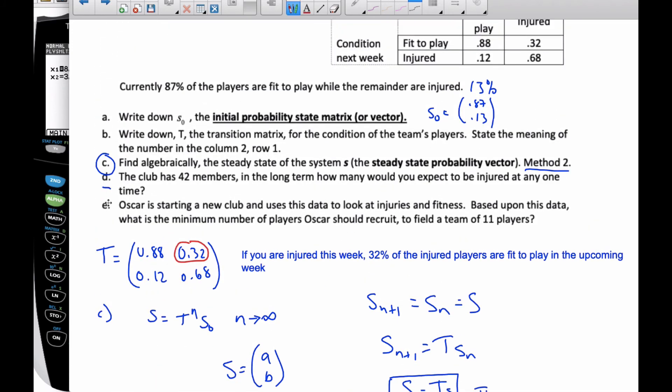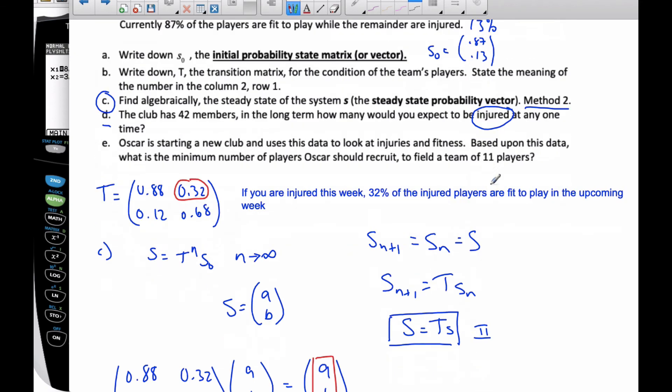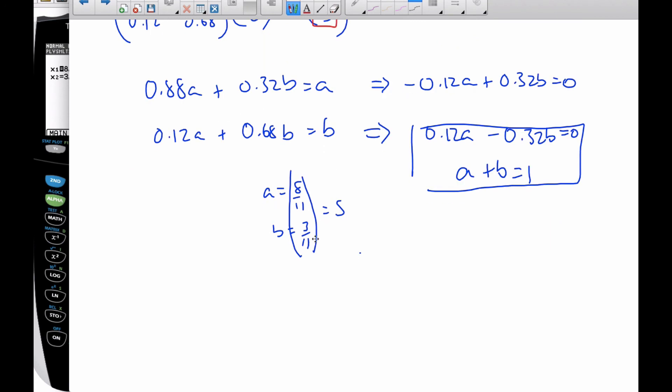D now, the club's got 42 members. In the long term, how many would you expect to be injured? Well, if I take my injured people, so this is the D part, if I take my injured proportion, which is this, and I multiply it by 42, that will be what I expect to get injured.